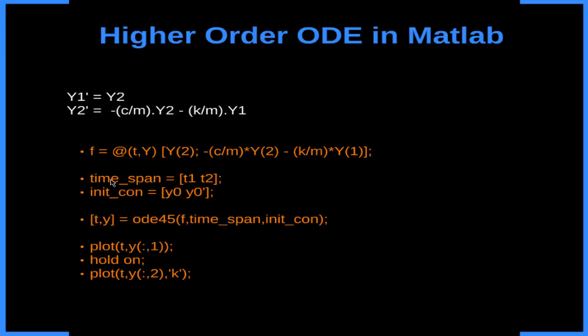So next step is defining the time span and the initial conditions, and then we call the function ode45 for F and these parameters. We are going to get the solution in this vector t and y.